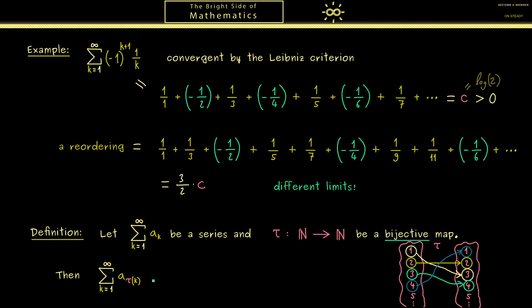Now you might already guess the new series where we put in tau k as the index is called a reordering of the original series. So we have the same terms involved but possibly in a different order. And this simply works by shuffling the natural numbers with the help of a bijective map tau.